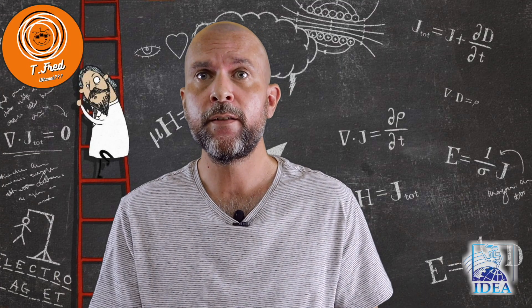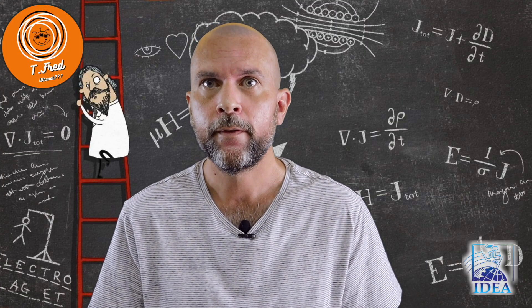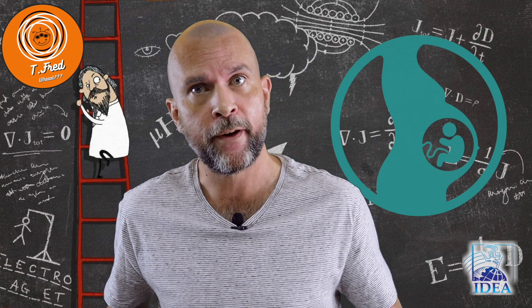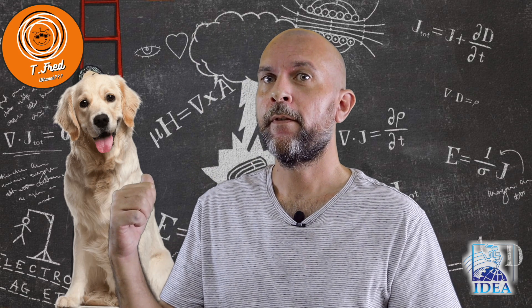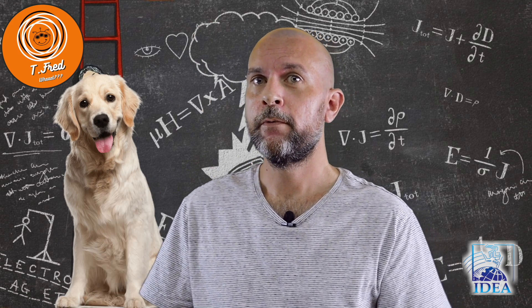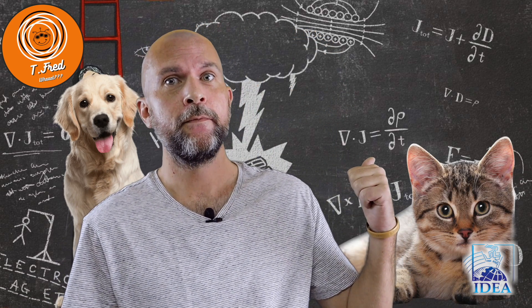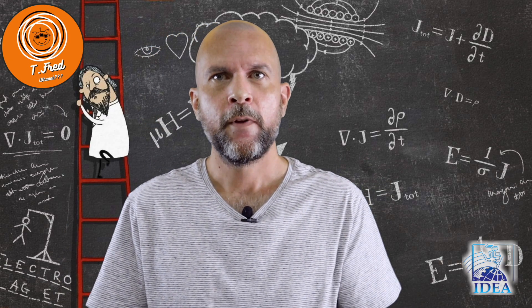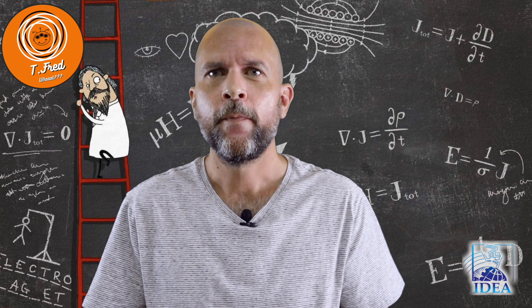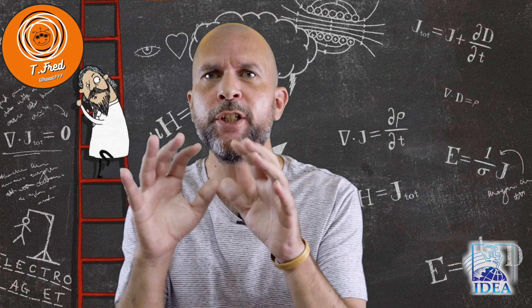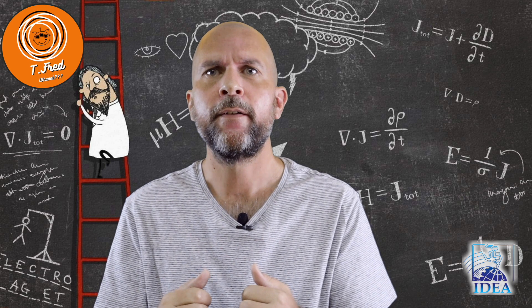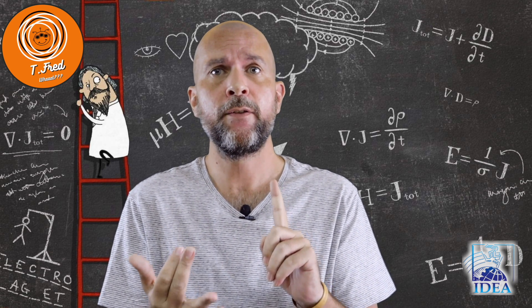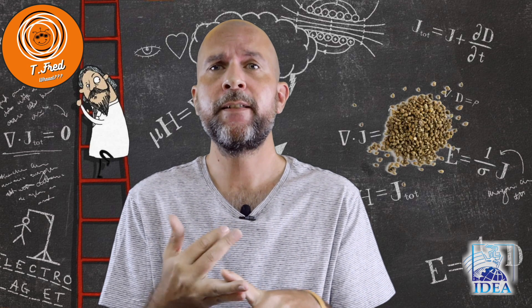Some living things give birth, which means the young grow inside the mother — such as certain animals and people. Other animals lay eggs; the young grow inside a shell inside the mother. Plants don't give birth and don't lay eggs — plants make seeds.